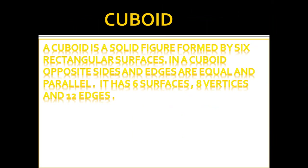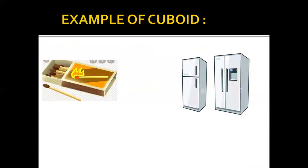A cuboid is a solid figure formed by six rectangular surfaces. In a cuboid, opposite sides and edges are equal and parallel. It has six surfaces — surfaces mean faces — eight vertices — vertices mean where the angles meet — and 12 edges — edges mean corners. You can see many things in the shape of a cuboid in your houses, like a cupboard, fridge, washing machine, mail pack, matchboxes, and many other things.